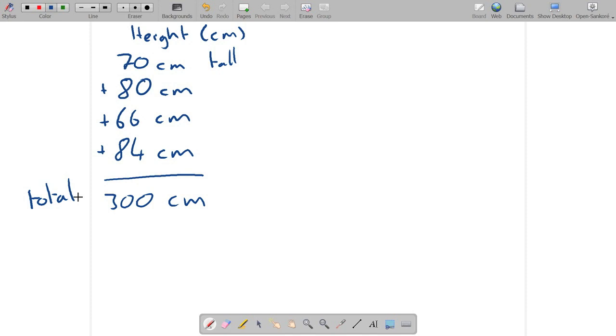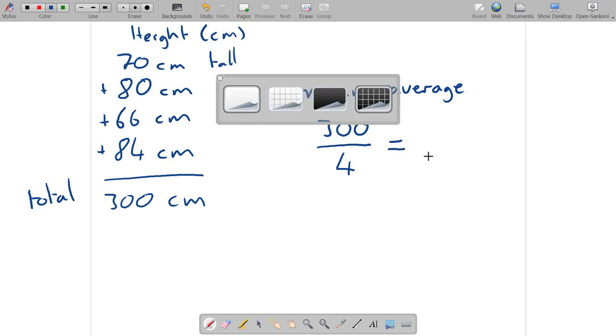And now if we wanted the mean, the mean average would be 300, that's the total, divided by the number of individuals we measured, which is 4. And that equals 75 centimeters.